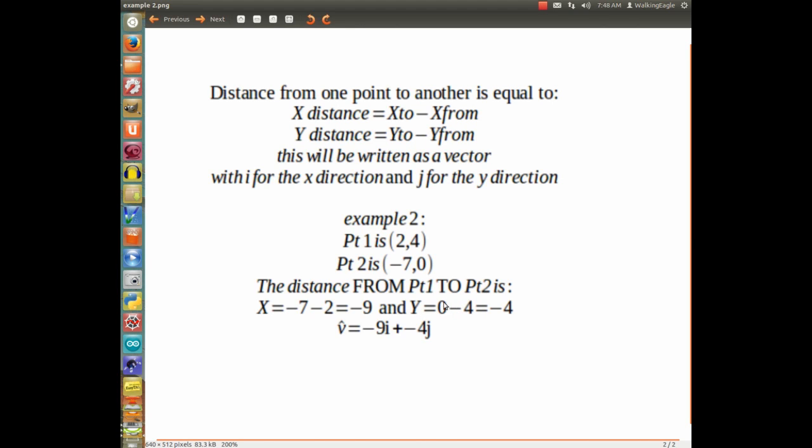because y value of the second point is 0. And we got 4, positive 4, and we have to subtract that. So that gives us minus 4. Our vector is minus 9i plus minus 4j.